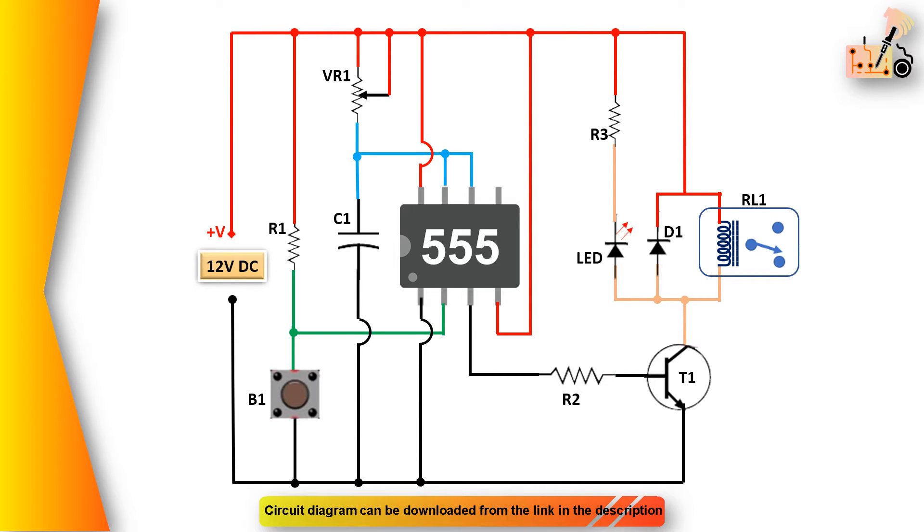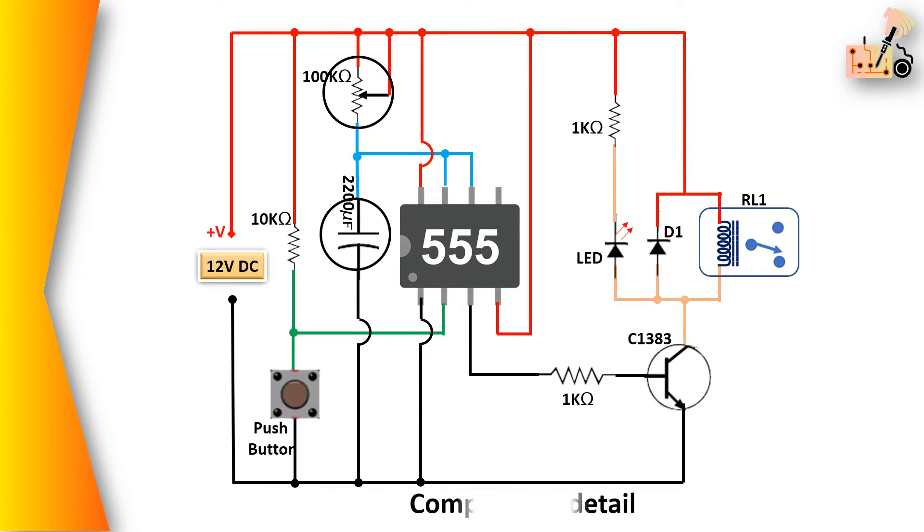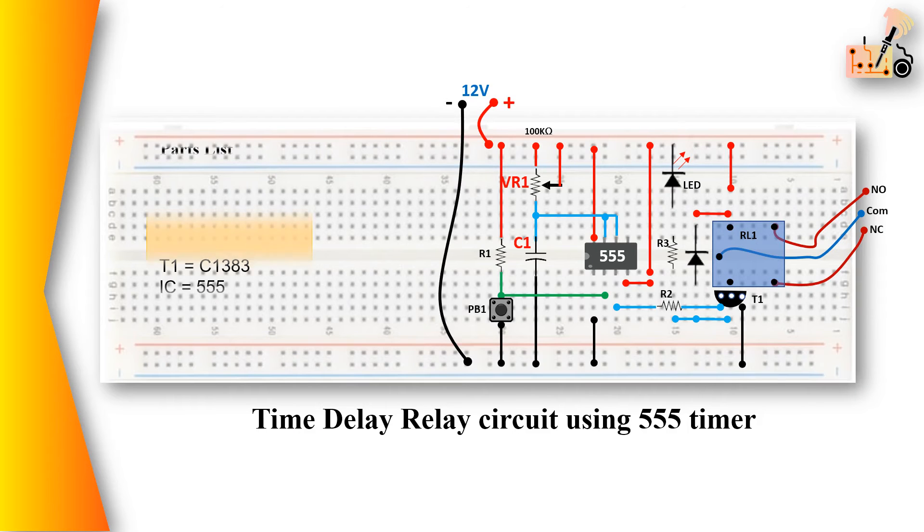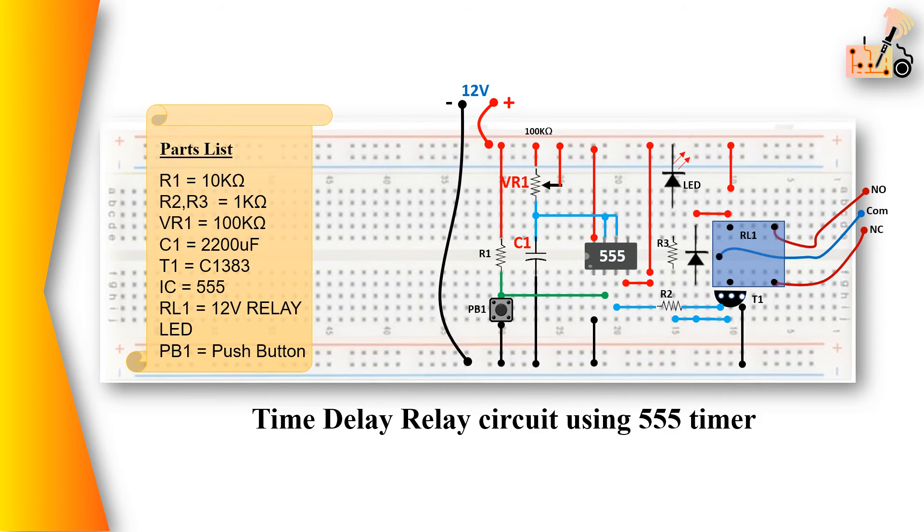To create a timer ranging from 1 second up to 1 hour, you will need to adjust the values of VR1 and C1. The details for time calculation are provided in the description.